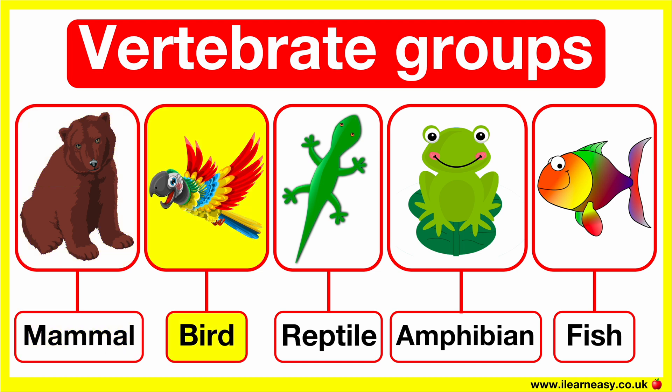Birds have feathers and they use their lungs to breathe. Birds lay eggs and their temperature is usually stable; therefore, they are warm-blooded animals.